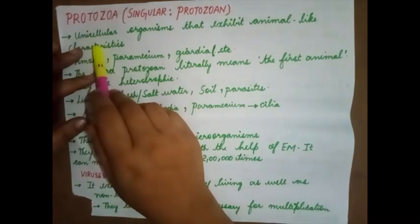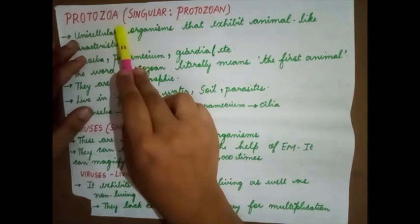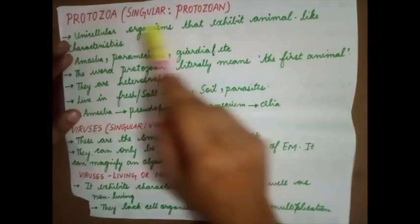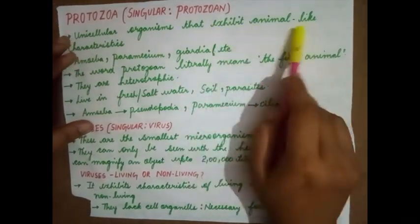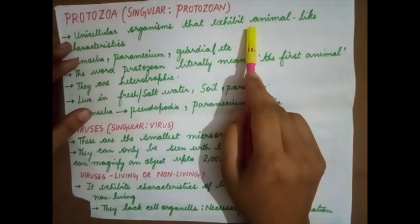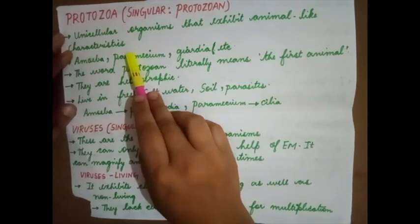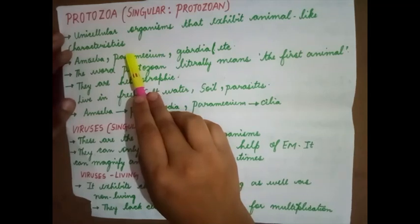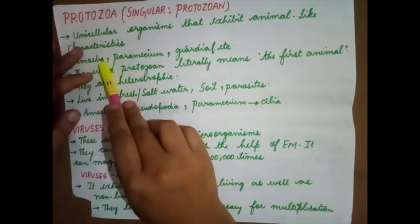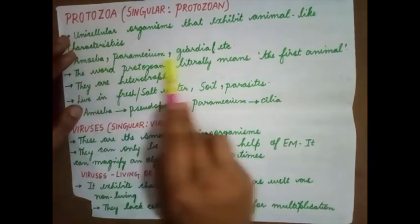We will move on to study the next category of microorganism, that is protozoa (singular: protozoan). They are unicellular organisms that exhibit animal-like characteristics. Unicellular means they are single-celled. Animals are heterotrophic, so one characteristic of protozoa is that they are heterotrophic — dependent on other organisms for food. Examples include amoeba, paramecium, and giardia.